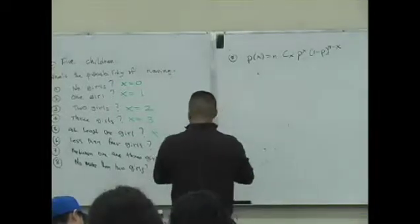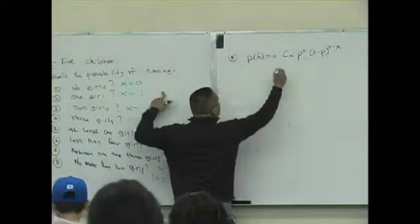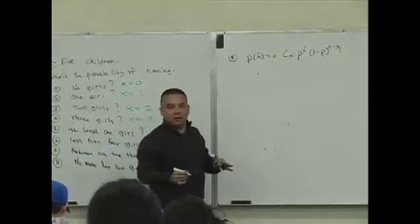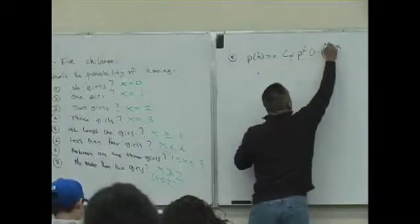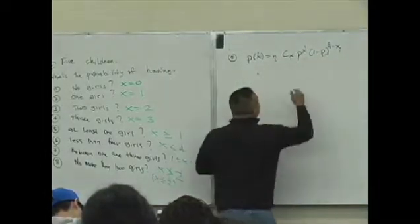So now here, the value of X is what? What's X? 1, 1, 1, 1. What is N? N. 5. Good. What is P? 1 half.